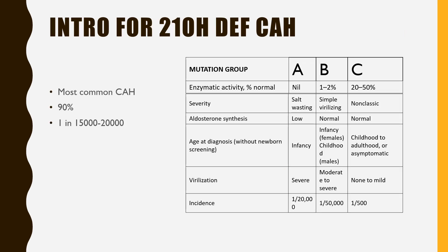If asked a question on classical CAH, start with: this is a disorder of adrenal steroid biosynthesis, secondary to 21-alpha hydroxylase deficiency, the most common CAH accounting for 90% of total cases, with an incidence of 1 in 15,000 to 20,000. Salt-wasting CAH has almost zero enzyme activity, so there will be a very early presentation with shock, dehydration, and hyponatremia, with very severe virilization.